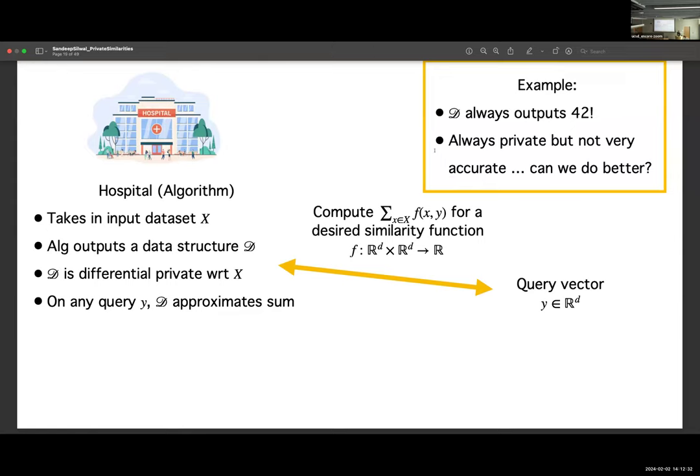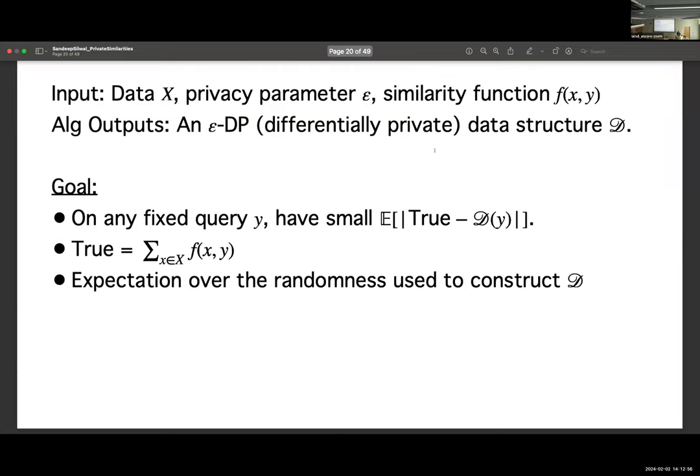And this might be a little weird. Like how can we have privacy if we're allowed to query infinitely many times? Well, we're going to give up on something which is accuracy. We're not going to be correct all the time, but most of the time it will be correct. So one example is, if the data structure always outputs the answer 42, that's my data structure. Well, it's always private. It's always saying 42, but it's not very useful. It's not very accurate. So now we've demonstrated there is some point on this accuracy privacy trade-off. So now we have one point on the curve. What is the best that we can do?